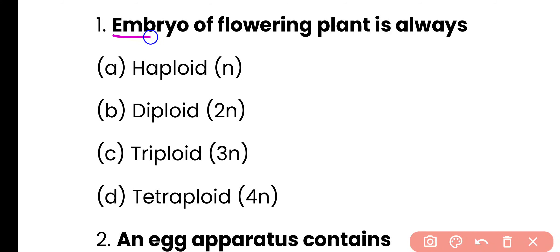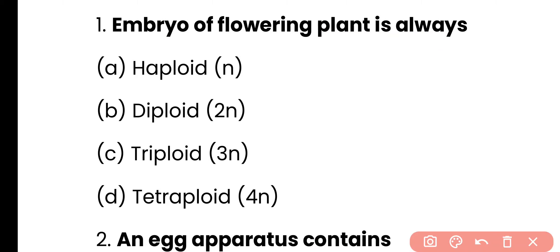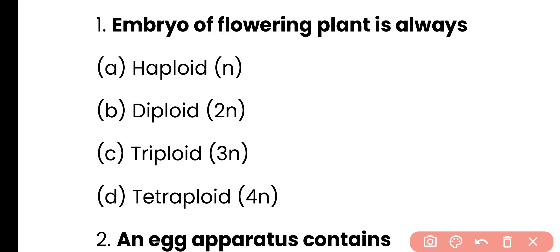Question number 1. Embryo of flowering plant is always: haploid, diploid, triploid, or tetraploid? The correct answer is option B. The embryo of a flowering plant is always diploid in nature.